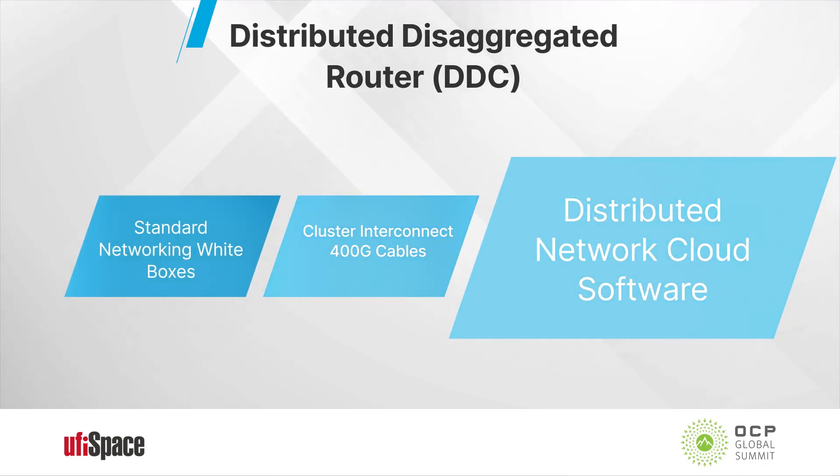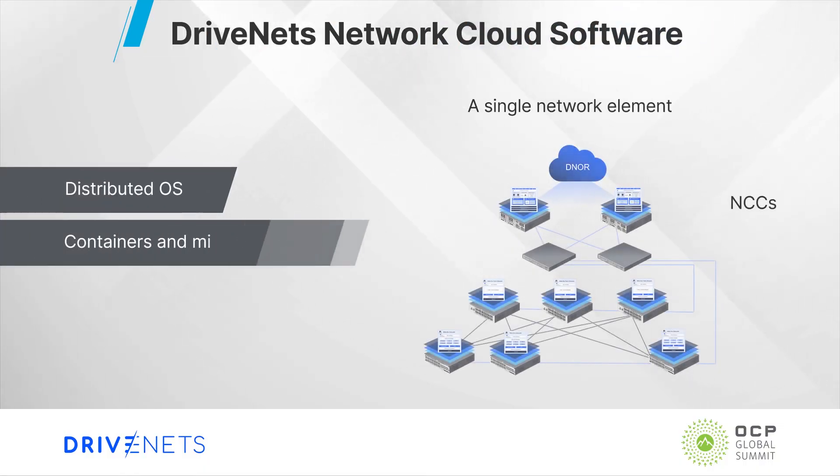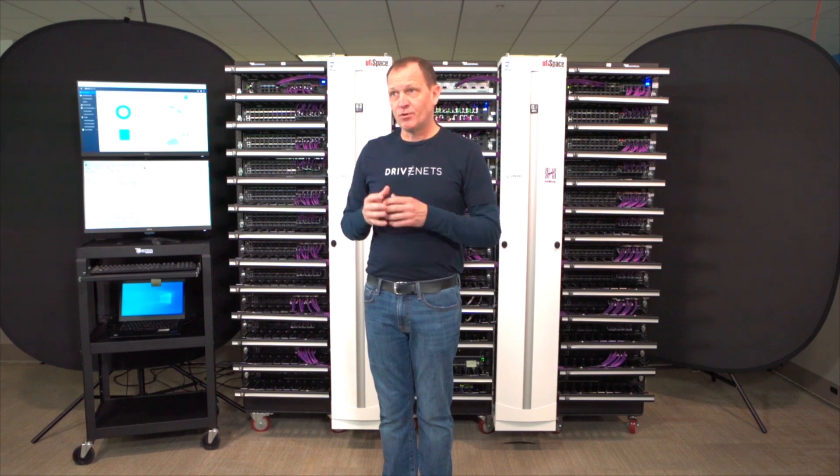Now let's talk about the software. The software that powers this demonstration behind me is the DriveNets Network Cloud. It creates operational simplicity out of hardware complexity. The DriveNets Network Cloud consists of the DriveNets Network Operating System, or D-NOS, and the DriveNets Network Orchestrator, or D-NOR. It is a clean-sheet design system built to support everything from a single box through the 96 terabit version behind me, as well as systems up to 192 terabits. It's distributed software based on containers and microservices and allows scale as you add hardware elements. Most importantly, it makes this collection of hardware behind me look like a single network element — a single router in your network.